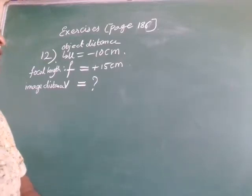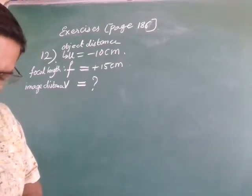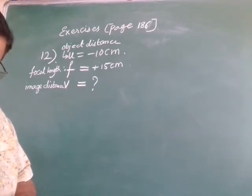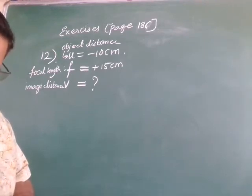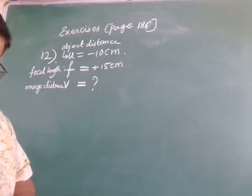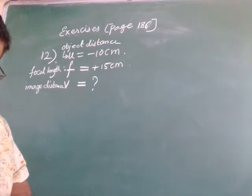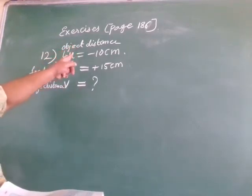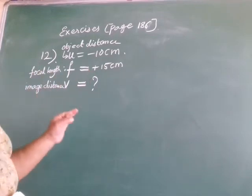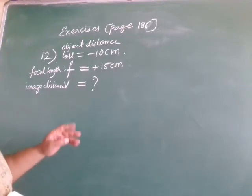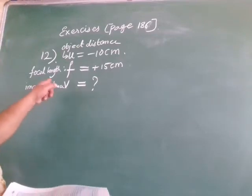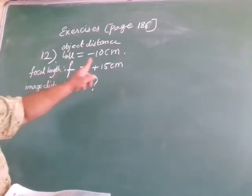Question 12 on page number 186: an object is placed at a distance of 10 centimeters from a convex mirror of focal length 15 centimeters. Find the position and nature of the image. Object distance u equals minus 10 centimeters (negative since the object is to the left of the mirror). Focal length f equals plus 15 centimeters since it is a convex mirror.